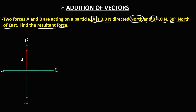For force B, 30 degrees north of east — drawn at the end of force A — we have north and east marked. Since it is north of east, we go from east toward north, and the angle is 30 degrees. This gives us the resultant force.